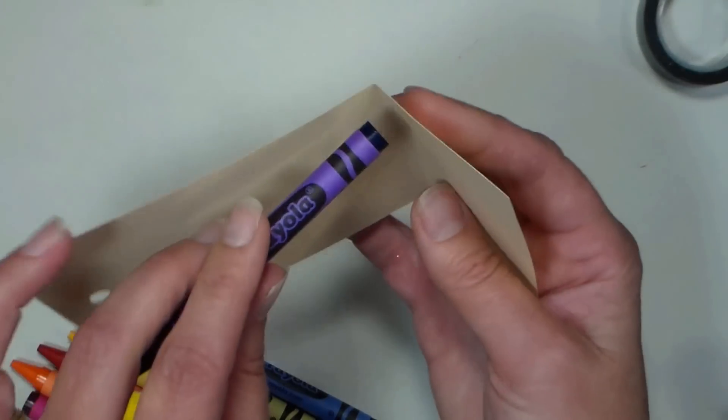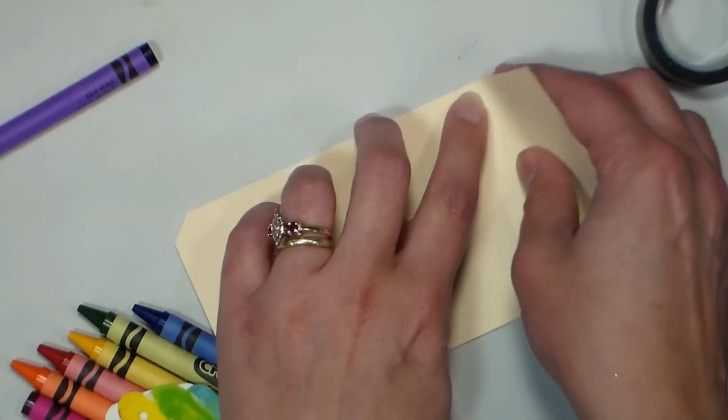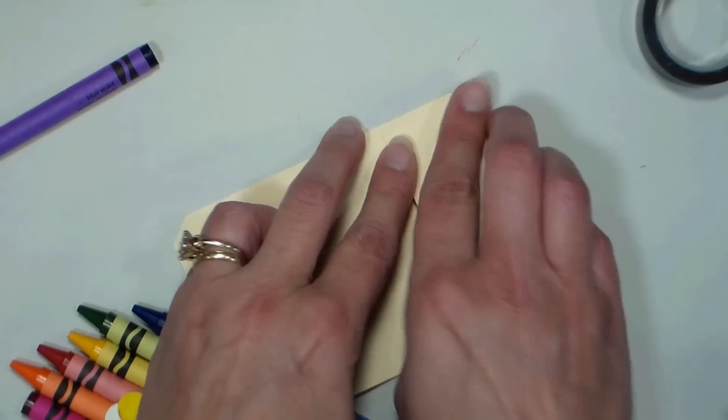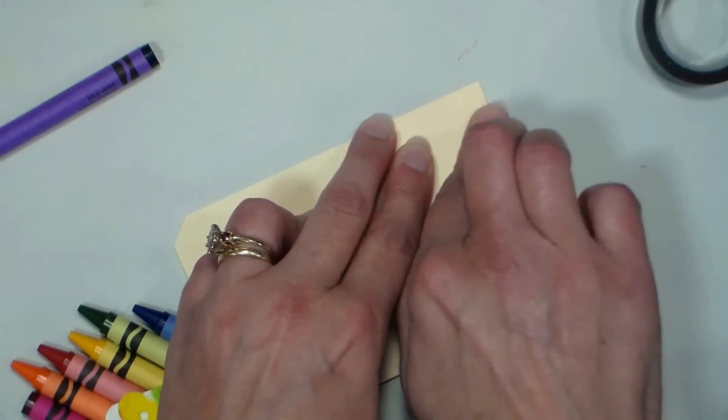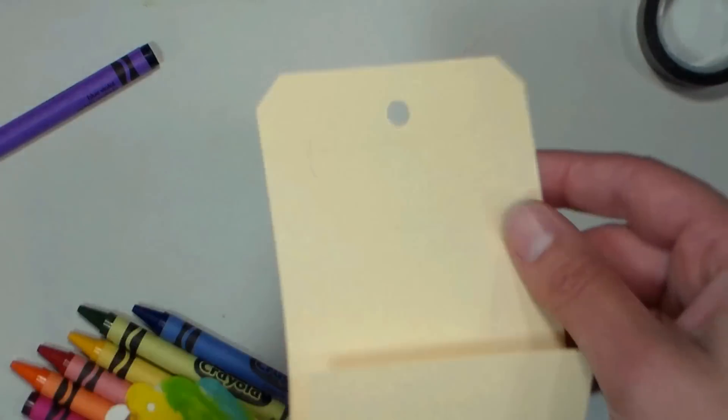And then these crayons are probably about a quarter of an inch wide, so I'm just going to make another little fold right there. As long as you line your edges up you'll get a really nice crisp fold, and that's how easy making a little packet is.